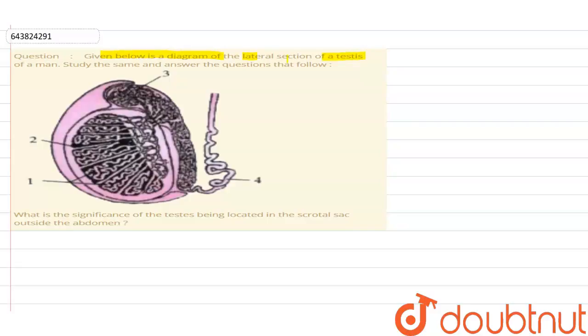Study the same and answer the questions that follow. The question asks, what is the significance of the testis being located in the scrotal sac outside the abdomen?